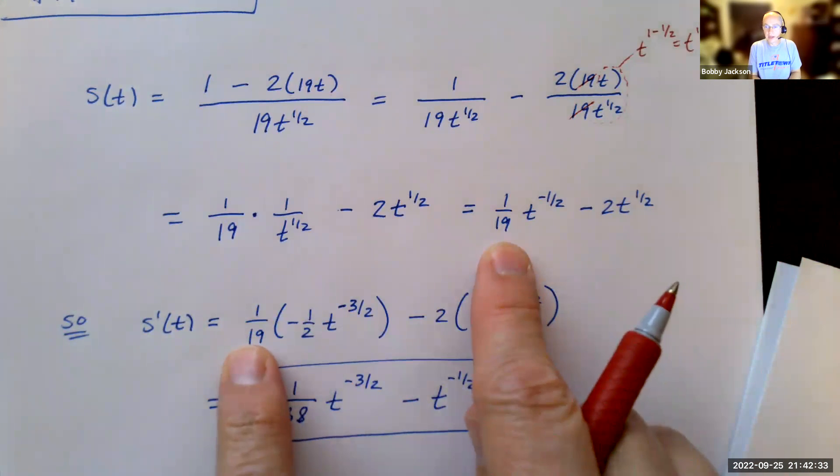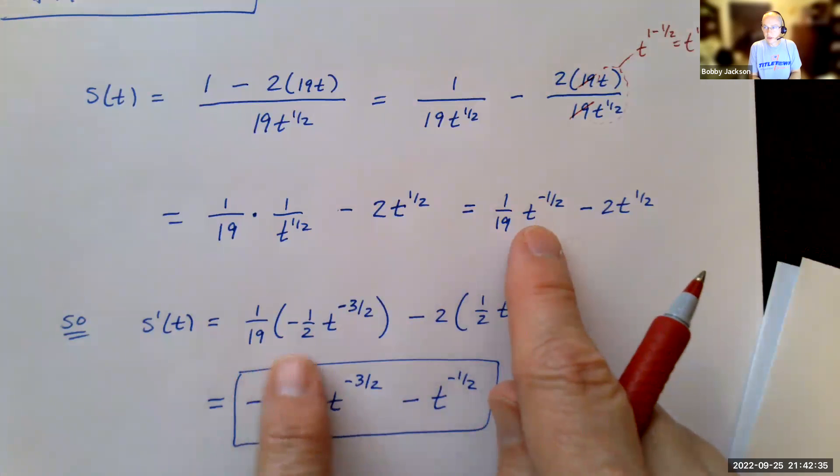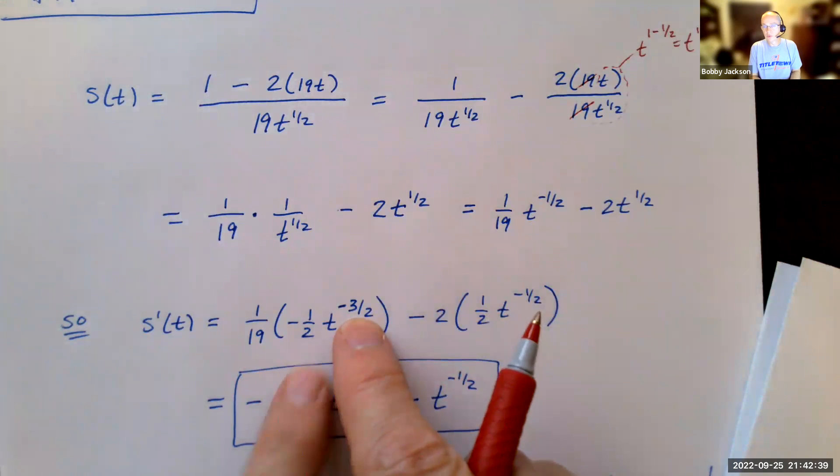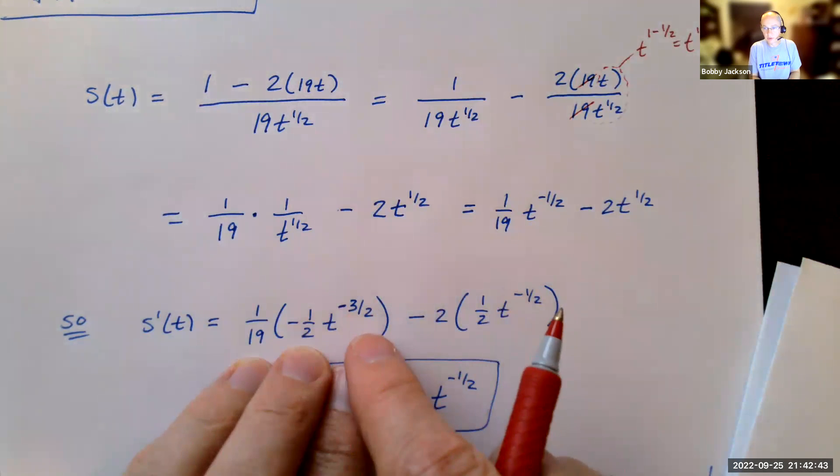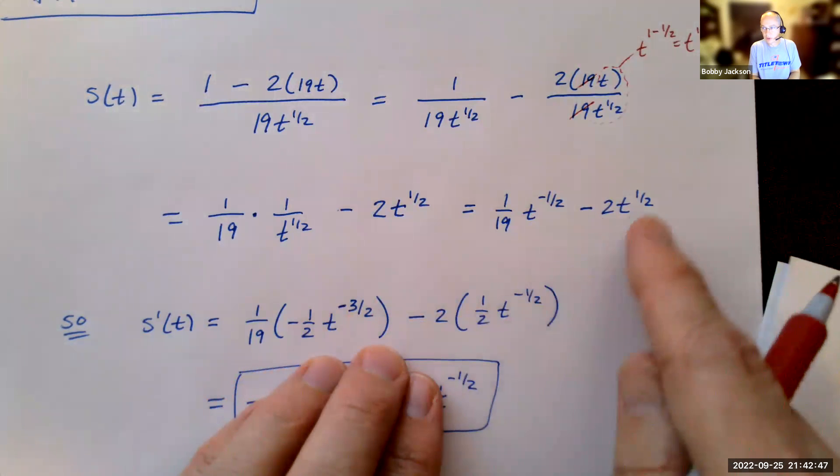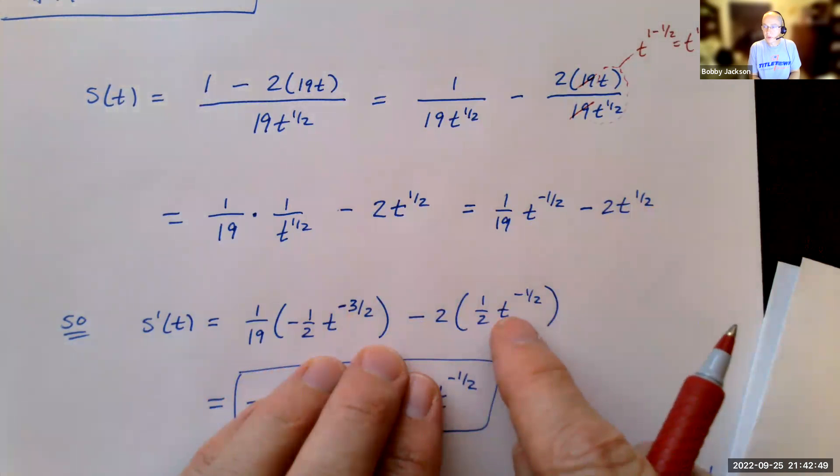I pull out the 1/19th, which is a constant multiple. The derivative of t to the negative 1/2 is negative 1/2 t. Subtracting 1 from negative 1/2 gives me negative 3/2. There's the derivative for the first part minus the 2 is a constant multiple. Bring the 1/2 down. Subtract 1 from 1/2 gives me negative 1/2.